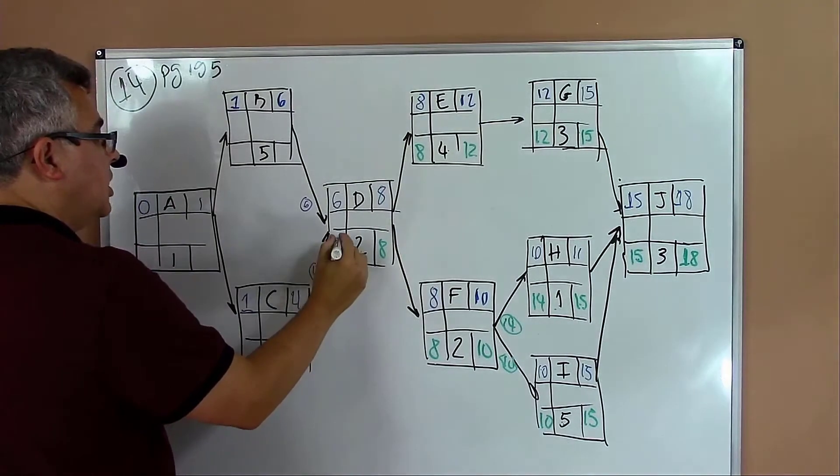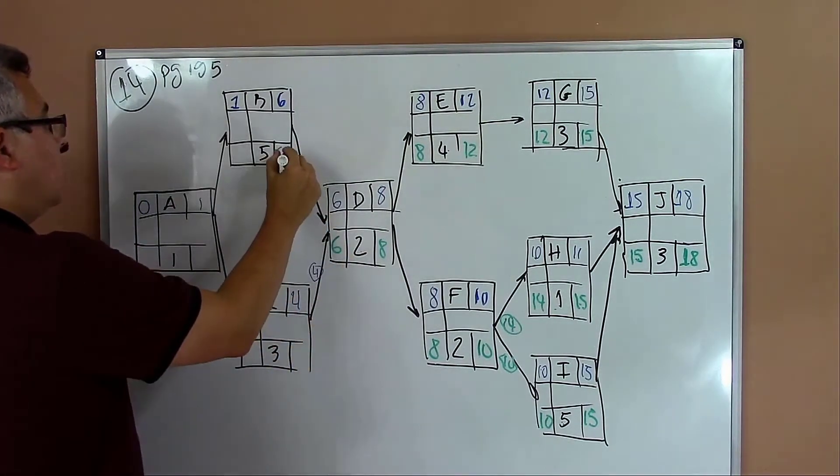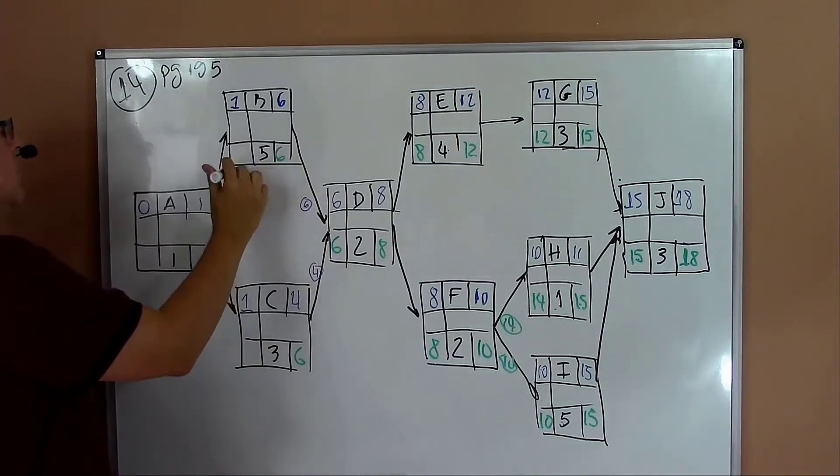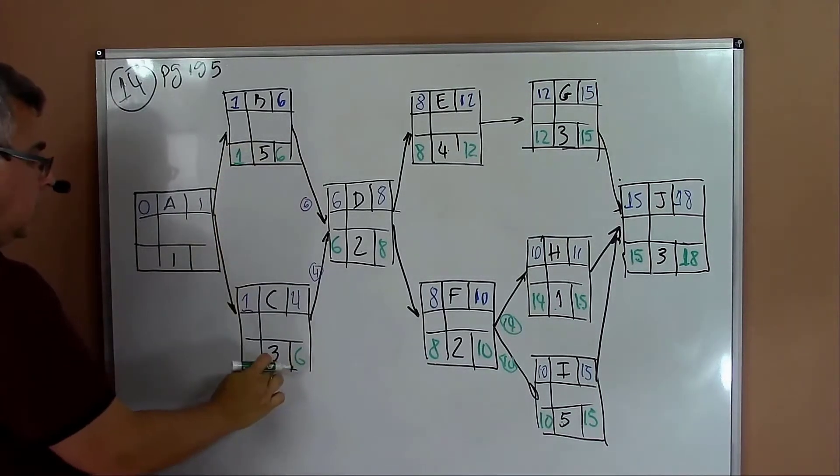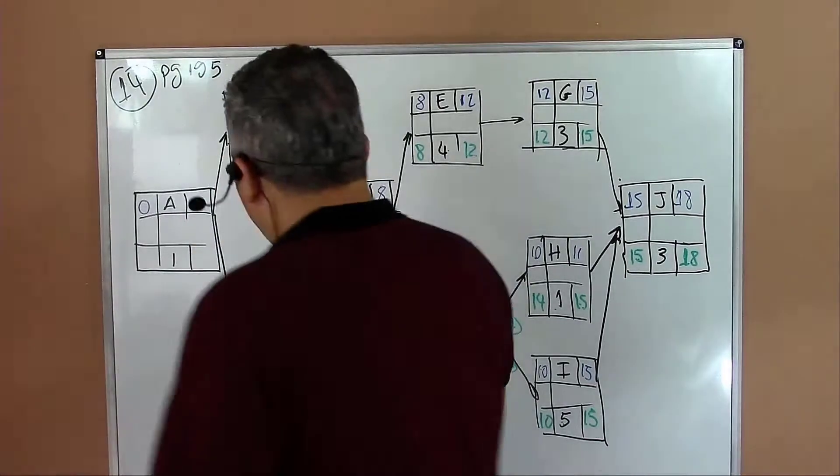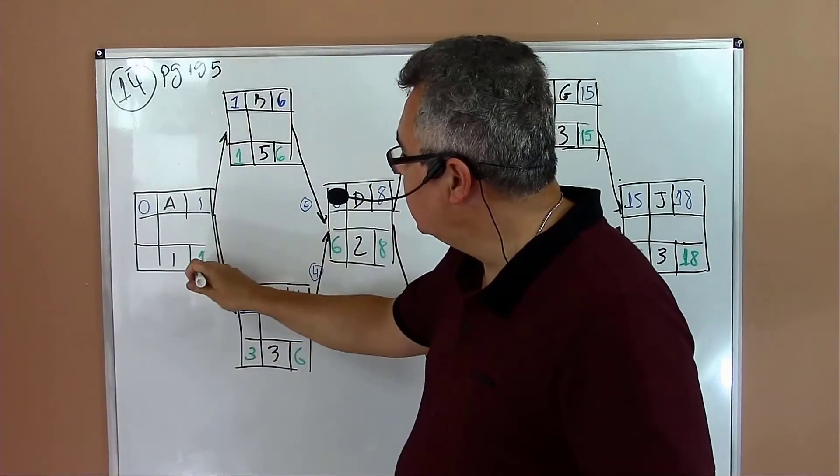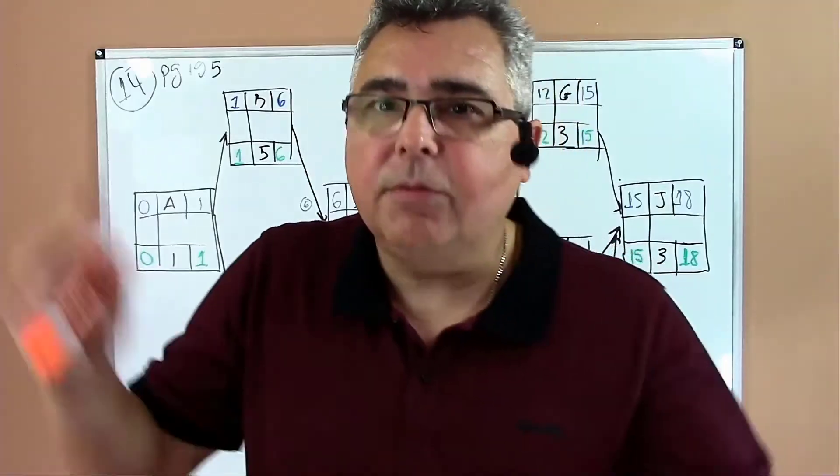Now we have two eights, so it should be eight. Eight minus two equals six, and I move six here and here. For activity B it will be six minus five equals one. Six minus three equals three. Now we have three and one. Because it's a backward path, we should pick the lowest number, which is one.